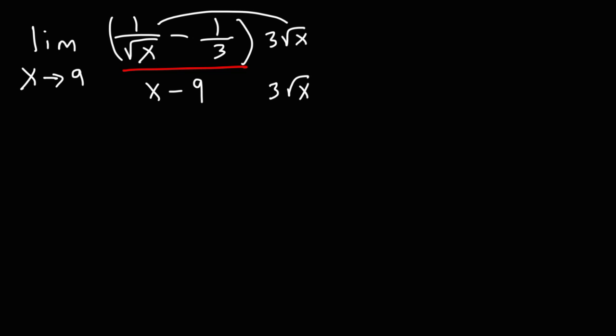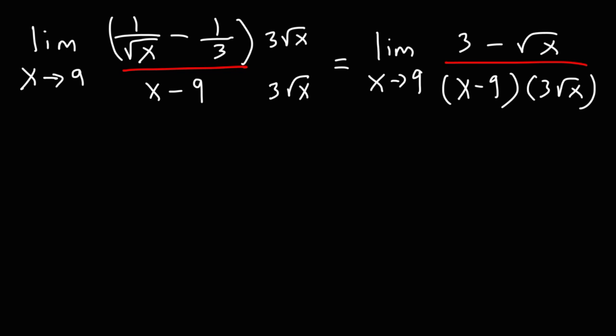3 square root x times 1 over square root x. These two will cancel leaving behind 3. So we're going to have the limit as x approaches 9. We're going to have a 3 on top. Now 3 square root x times 1 over 3. The 3's will cancel and so we're going to get negative square root x. On the bottom we have x minus 9 times 3 square root x.